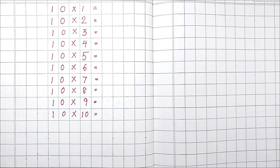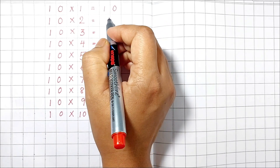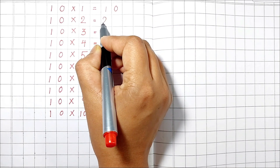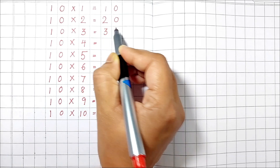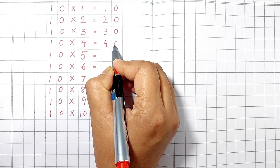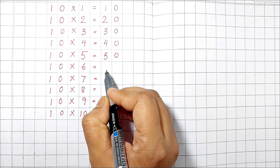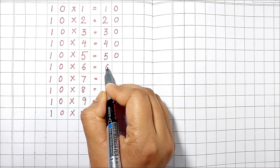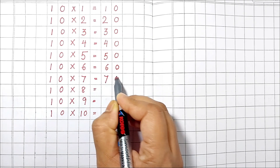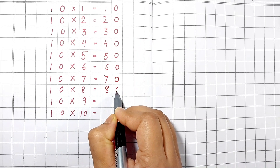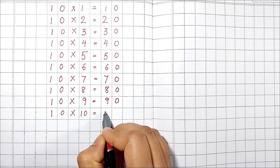Table of 10. 10 1's are 10. 10 2's are 20. 10 3's are 30. 10 4's are 40. 10 5's are 50. 10 6's are 60. 10 7's are 70. 10 8's are 80. 10 9's are 90. 10 10's are 100.